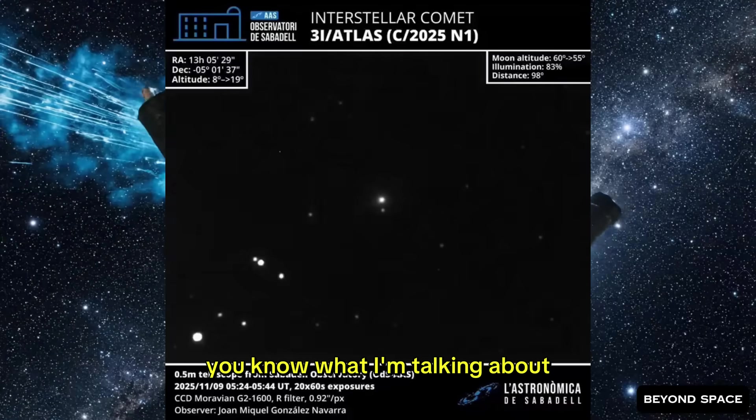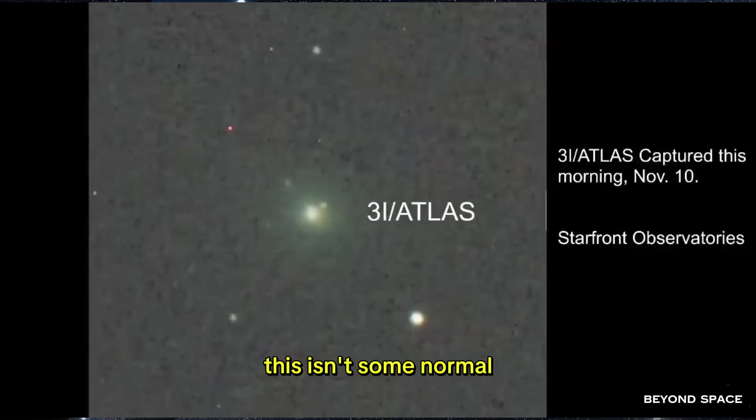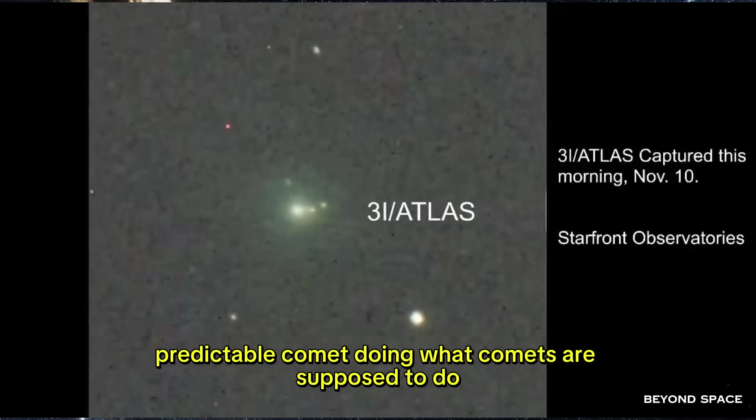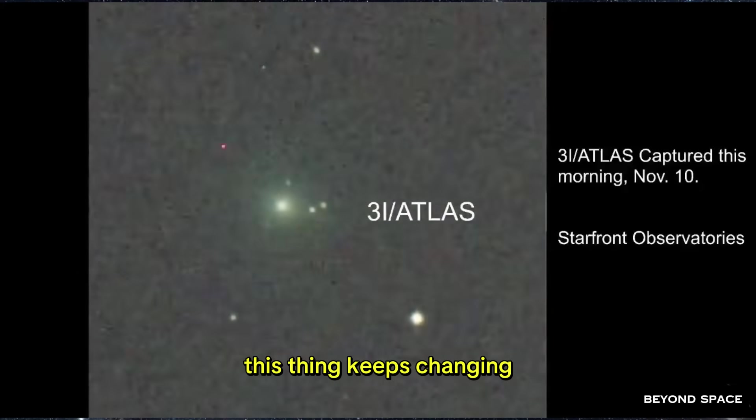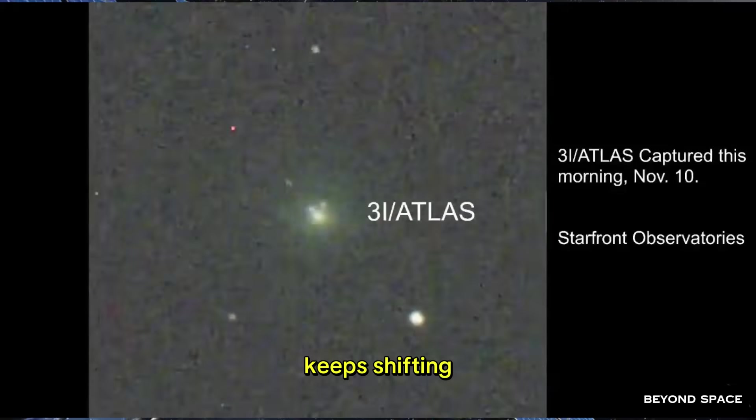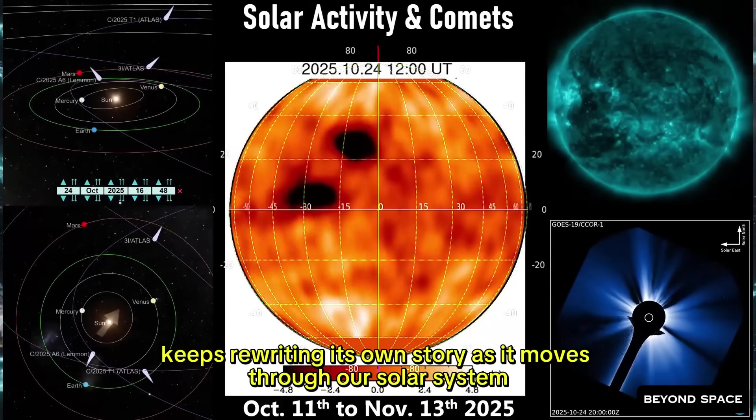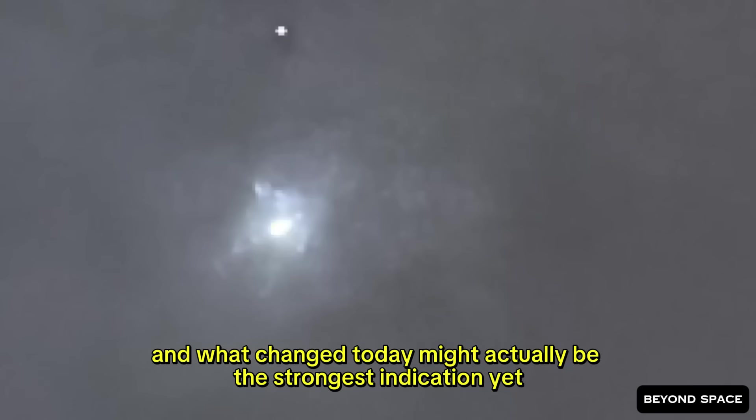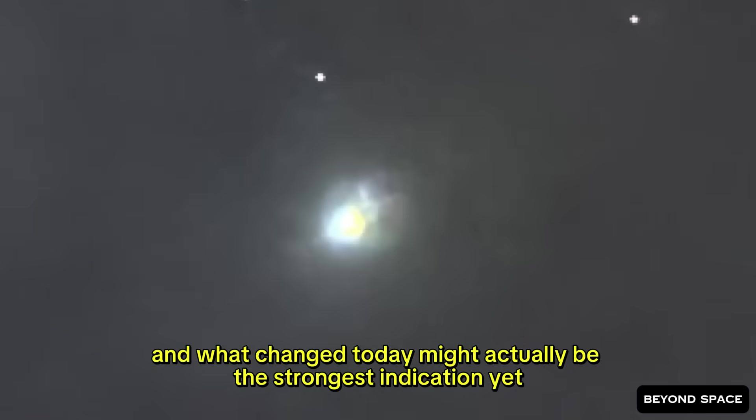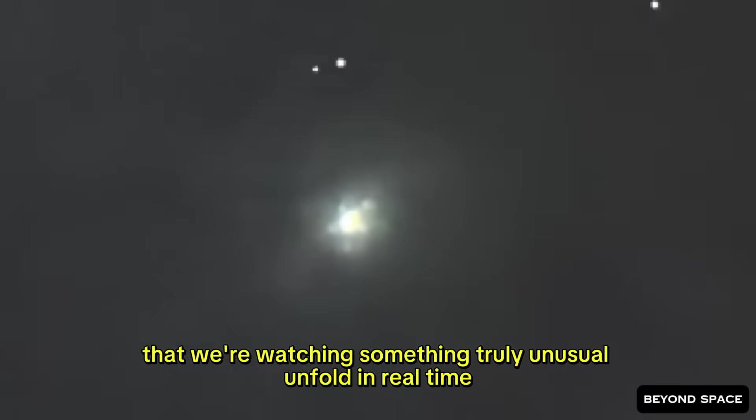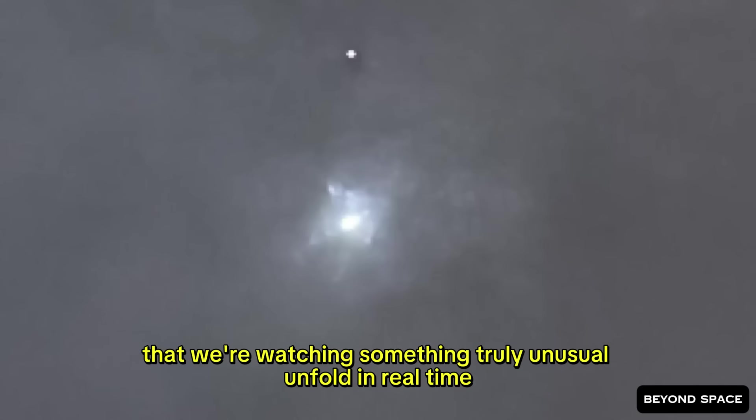If you've been keeping up with this whole saga, you know what I'm talking about. This isn't some normal, predictable comet doing what comets are supposed to do. This thing keeps changing, keeps shifting, keeps rewriting its own story as it moves through our solar system. And what changed today might actually be the strongest indication yet that we're watching something truly unusual unfold in real time.